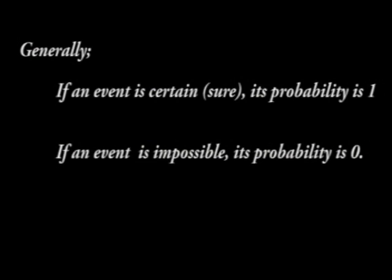Range of probability measure. If today is Monday, certainly tomorrow is Tuesday — the probability of tomorrow being Tuesday is 1. If a bag is empty, the probability of picking a bottle from the same bag is 0. Generally, if an event is certain or sure, its probability is 1. If an event is impossible, its probability is 0.